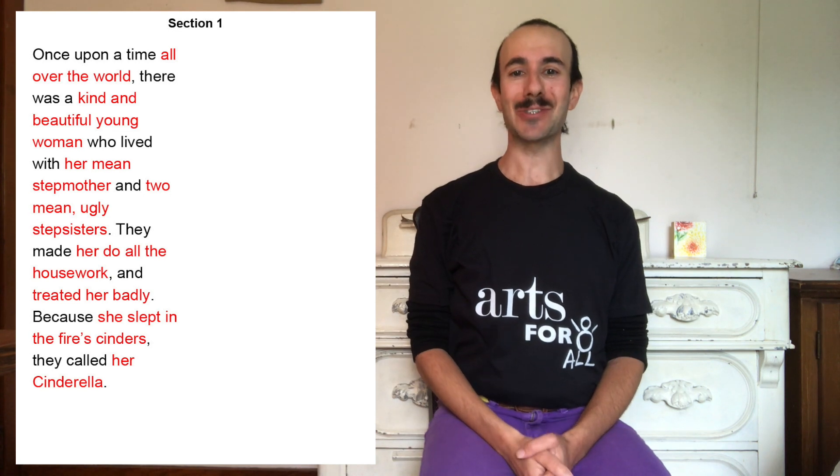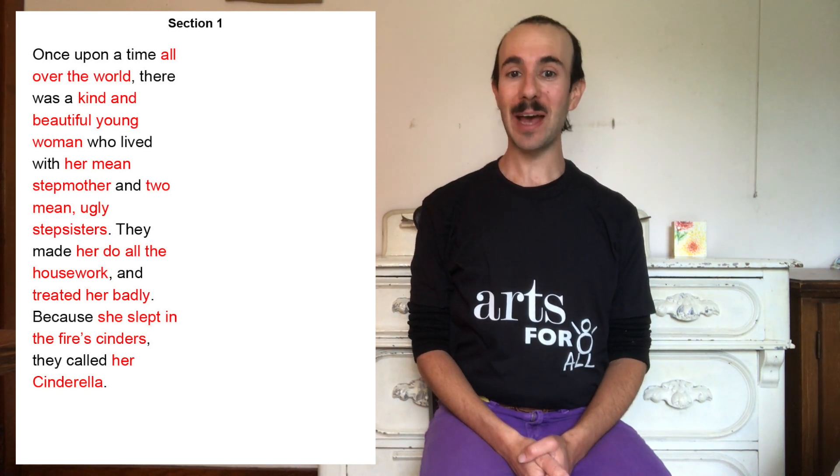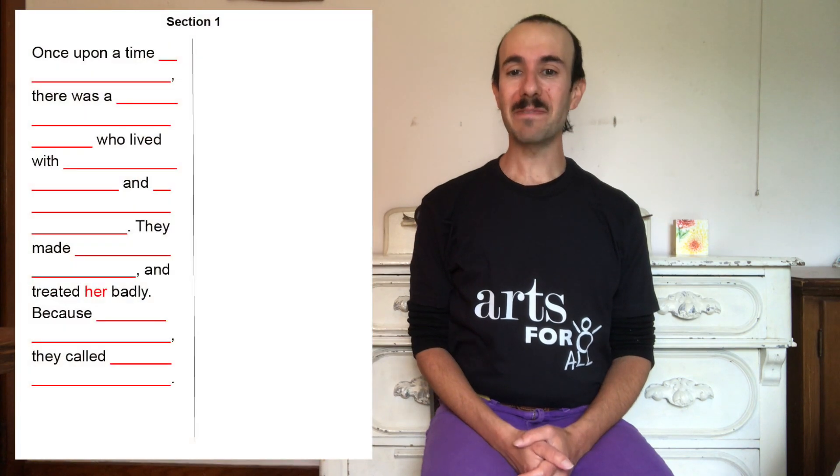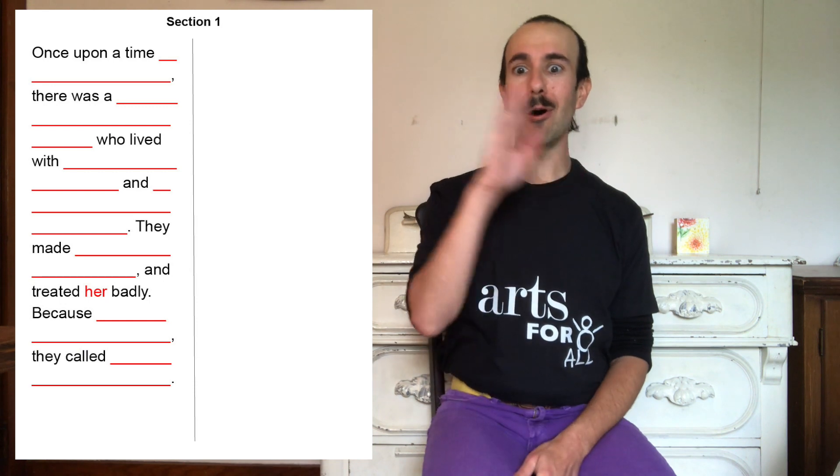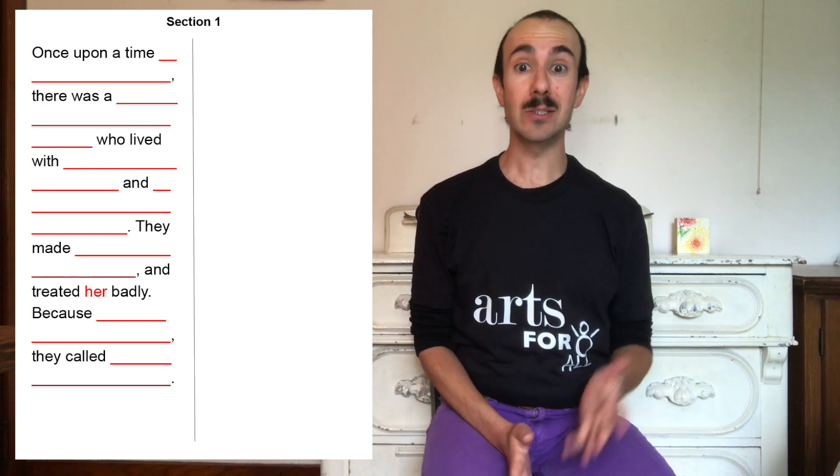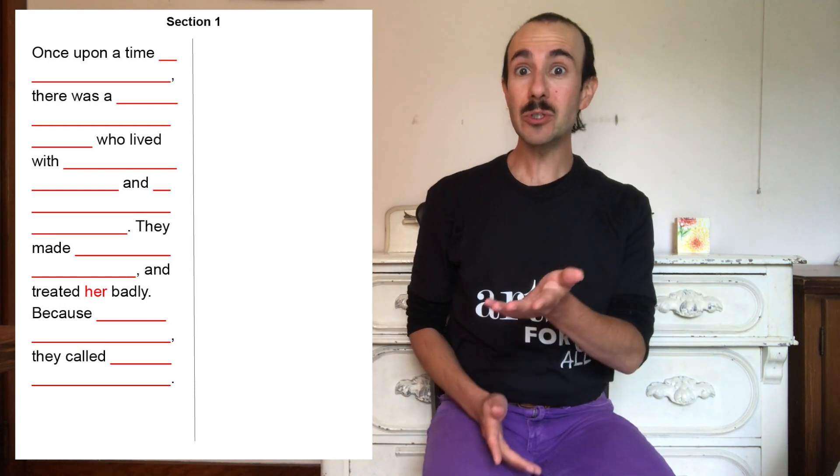Here's our first panel. See all those red words? Those are words that we might replace with our own ideas. Once upon a time, all over the world, there was a kind and beautiful young woman who lived with her mean stepmother and two mean, ugly stepsisters. They made her do all the housework and treated her badly. Because she slept in the fire cinders, they called her Cinderella. Now I'm going to record my answers in my notes and then put them all in at the end. Let's fill in our first blank — where do you want your story to be set? We saw stories that took place in France, China, Ireland, and all over the world. You could also set your story in a swamp, a chocolate chip factory, or in your school or your house.